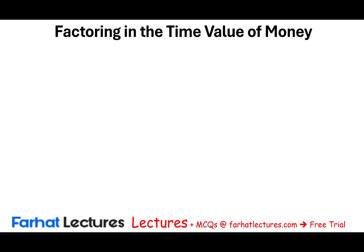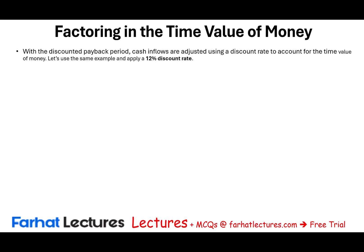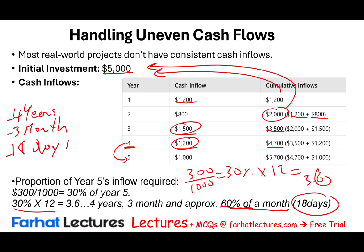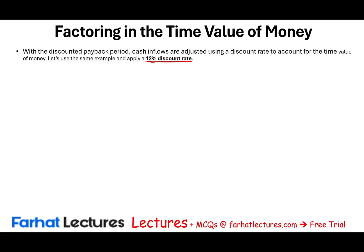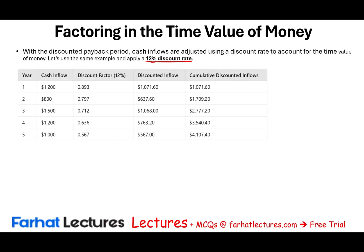Now let's factor the time value of money using the discounted payback period, discounting cash flows at 12%. Would it take more or less time than the undiscounted payback of four years, three months, and 18 days? It takes more, because discounting reduces the value of future money. Year one: $1,200 × discount factor = $1,071.60 cumulative. Year two: $800 × 0.797 = $637.60; cumulative $1,709. The discount factors come from the present value table at 12% for periods one through five.